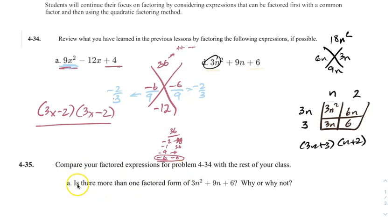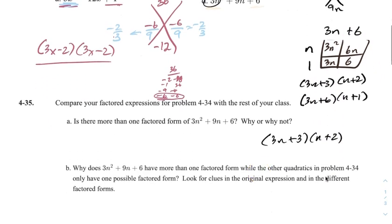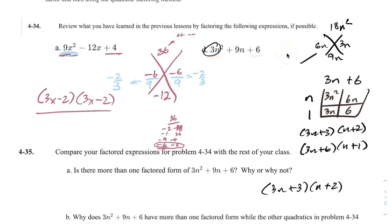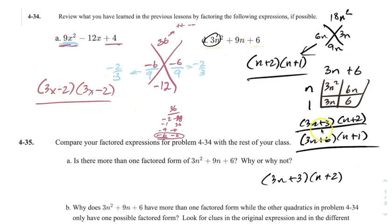Is there more than one way to factor this? Why or why not? And there is. So I got 3N plus 3 and N plus 2 one way. But if instead I put N up and down with the 3 right there, then this would have to be 6 and this would have to be 1. I can also factor that way — there's more than one way to factor that. So using the shortcut method I got N plus 2 and N plus 1. So I got 3 different answers based on how you do it.